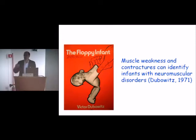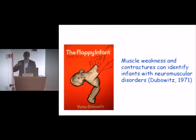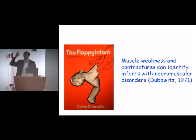In older children, we can use myometers, MRC measurements, and measure strength against resistance. But how do you do it in a newborn? It's very simple. You look for antigravity movements. If a child is strong, they will be able to lift the arms or the legs and to perform full antigravity movements.